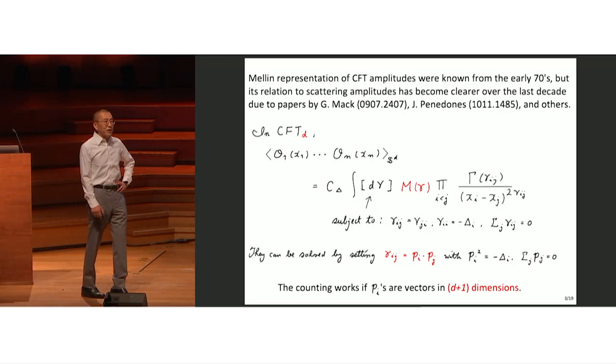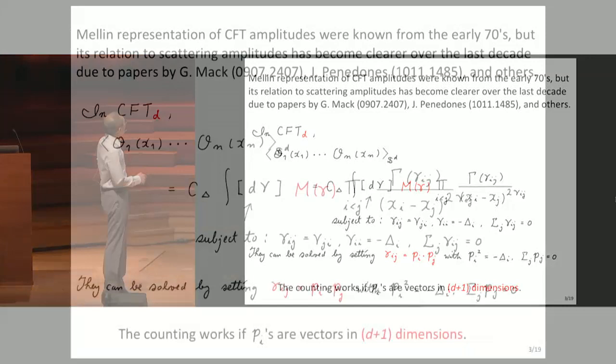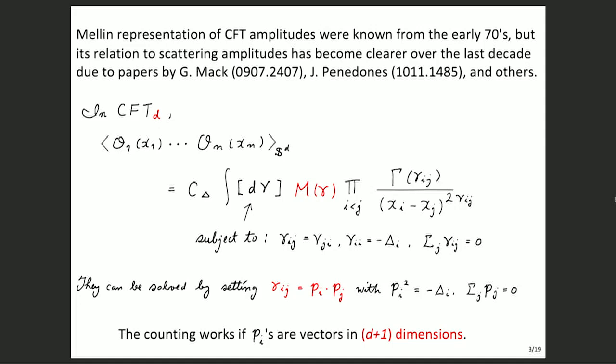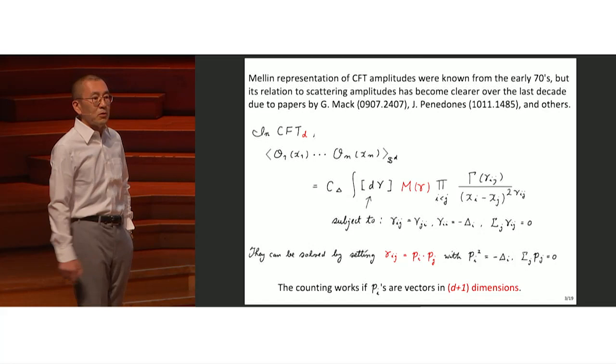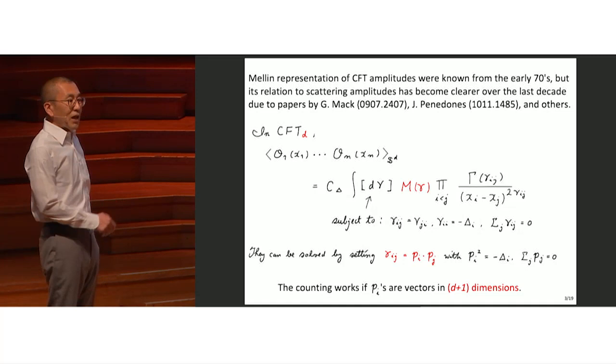Let me first define the Mellin amplitude. You start with a conformal field theory in D dimensions and consider the correlation function of CFT on the D-sphere. You do a transformation with a set of variables, and M is the Mellin amplitude. It looks like Mandelstam variables satisfying the same properties: if you parameterize gamma_ij as a product of momenta p satisfying an on-shell condition, with mass given by the conformal dimension and momentum conservation, it satisfies this relation.